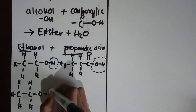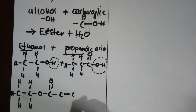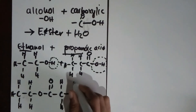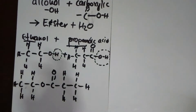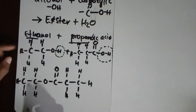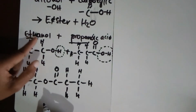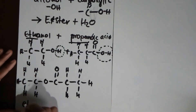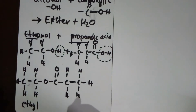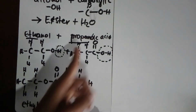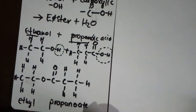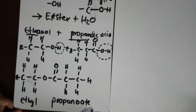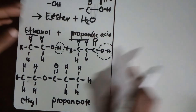We remove the H from the alcohol side, leaving a C-O without the hydrogen, and from the acid side we remove the O-H, leaving the carbon that's double-bonded to oxygen connected to the carbon chain. When we name esters, the part that comes from the alcohol becomes an alkyl group — so because it's ethanol it becomes 'ethyl.' The part from the acid, propanoic, becomes 'propanoate,' so our molecule is ethyl propanoate.